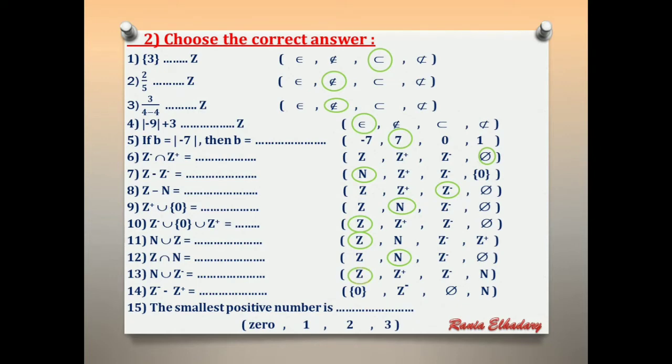Number 14: Z negative difference Z positive. If we subtract Z positive from Z negative, the answer is Z negative, because Z positive doesn't exist in Z negative.